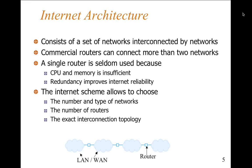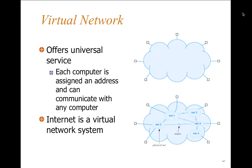Single routers are seldom used because we end up with inefficiencies. We normally deal with multiple different types of routers. Redundancy improves internet reliability because we have different ways to go — like having different traffic flow options on a freeway versus a side street. The internet scheme allows you to choose the number and types of networks, the number of routers, the exact interconnection, and the topology. If you actually have to build an intranet from scratch, you'll come up with a network architecture. It'll be the IT people assembling these pieces, not necessarily the developer.